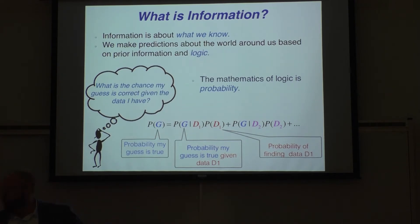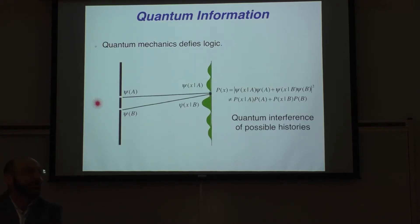Now, the deal is that quantum mechanics defies logic, at least the standard logic. If we wanted to ask ourselves, what's the chance that a photon will hit a certain place on the screen, if we were to think logically, we'd get it wrong. We would say, there's some chance that it went through this slit, and given that it went through that slit, there's a chance that it will go from here to here. That would just be the standard conditional logic. But that's not what's true. There's interference between alternative histories that can happen. Quantum mechanics tells us that just our general notion of logic is wrong.